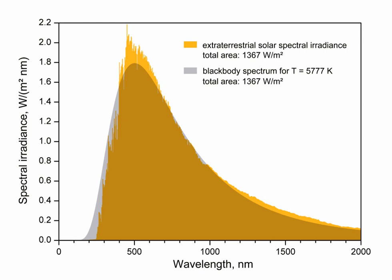The effective temperature of a star is the temperature of a black body with the same luminosity per surface area as the star, and is defined according to the Stefan-Boltzmann law: F_BOL = σT_eff⁴. The total luminosity of a star is then L = 4πR²σT_eff⁴, where R is the stellar radius.